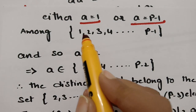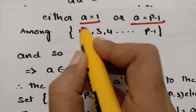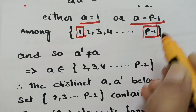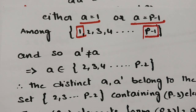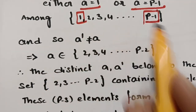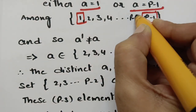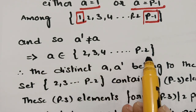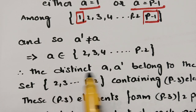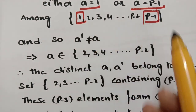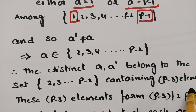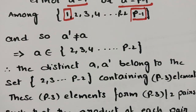The values a = 1 and a = p−1 are unique cases. We now suppose a' ≠ a, so we delete these two terms. The remaining elements are 2, 3, 4, …, p−2, which contain p−3 elements after deleting 1 and p−1.